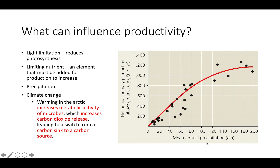Going back to precipitation: looking at this graph, we can see that mean annual precipitation has a pretty strong influence on net annual primary production. Net annual primary production refers to the gross primary production of producers in that ecosystem minus the energy used by those same producers for respiration — and that is what is plotted here on this graph.